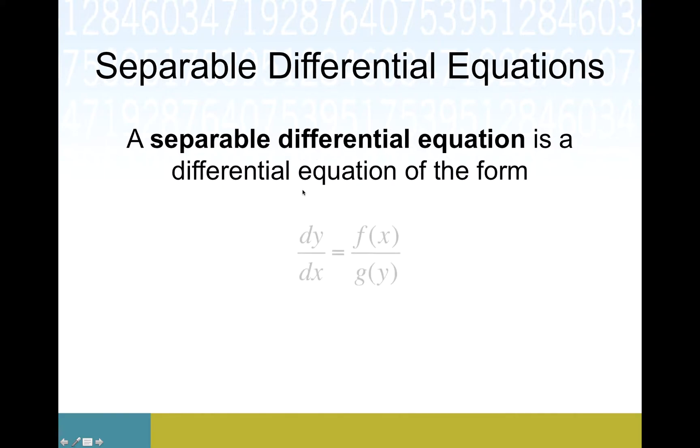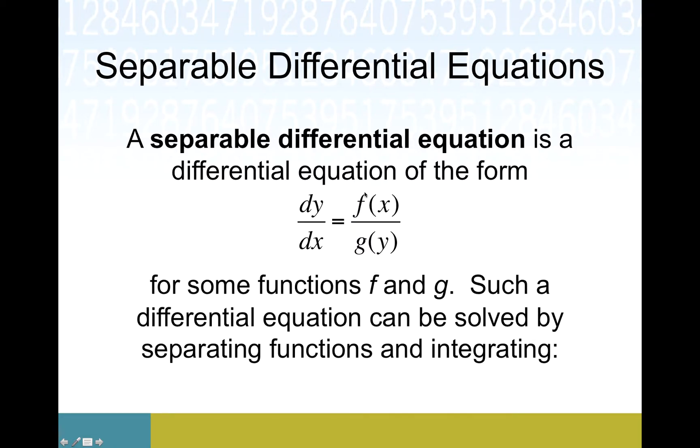If you recall for simple, we just had stuff with x's on the right side, and a separable one may also have some terms of y's on the right side. We can't get it so it just looks like a bunch of x's. We have terms that involve both y's and x's, and in particular they can be sorted like this.